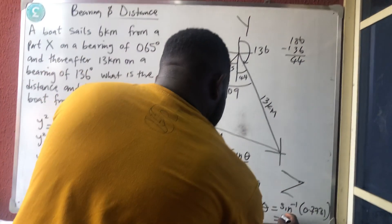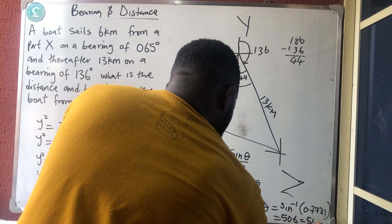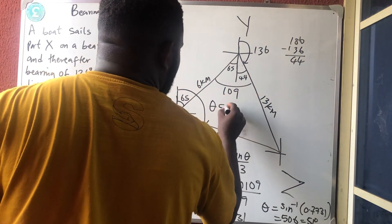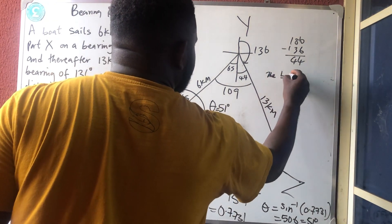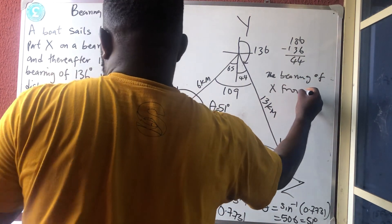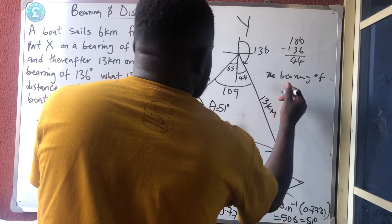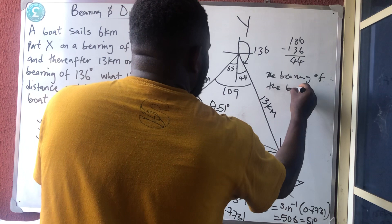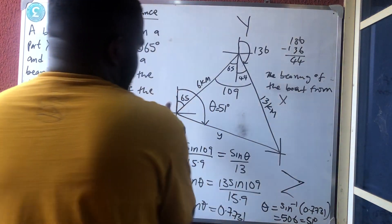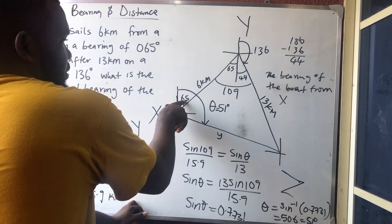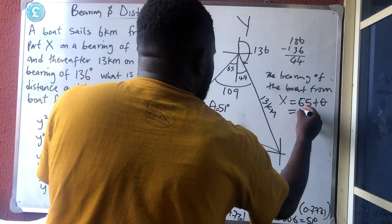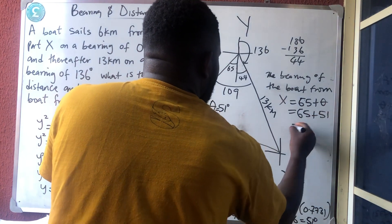So the bearing. You will not tell them 51°. You will not tell them that the bearing of the boat from X is starting from here till you touch that line, which is what? 65° plus θ, which is 65° plus 51°, which is 116°.